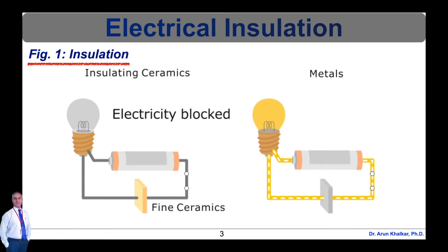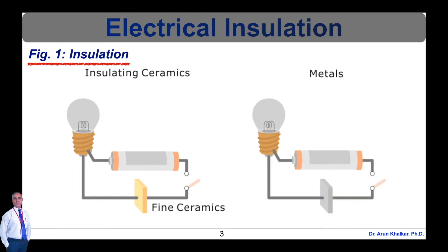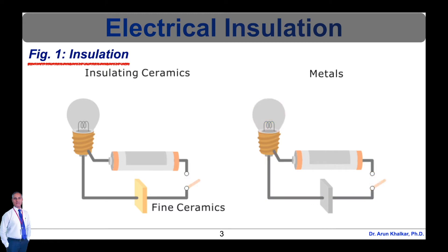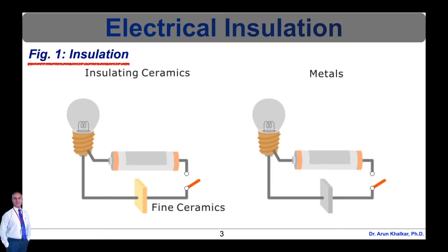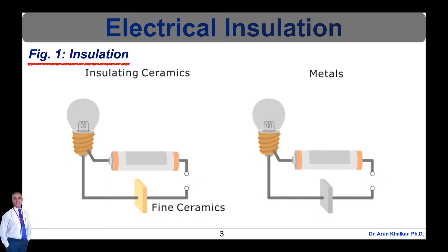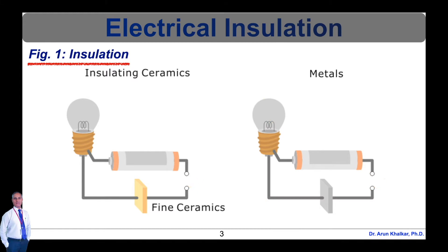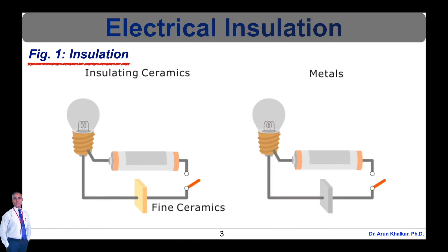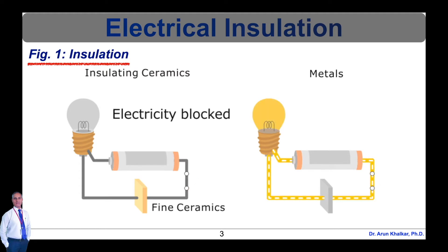Ceramic packages provide advanced hermetic sealing and electrical insulation between electric circuit lines to maintain the high reliability of these electronic components. So, electrical insulation — a material that is unable to conduct electricity due to a high level of electrical resistance — is an insulator. In contrast, a conductor is a material that offers low resistance to electric conductivity.